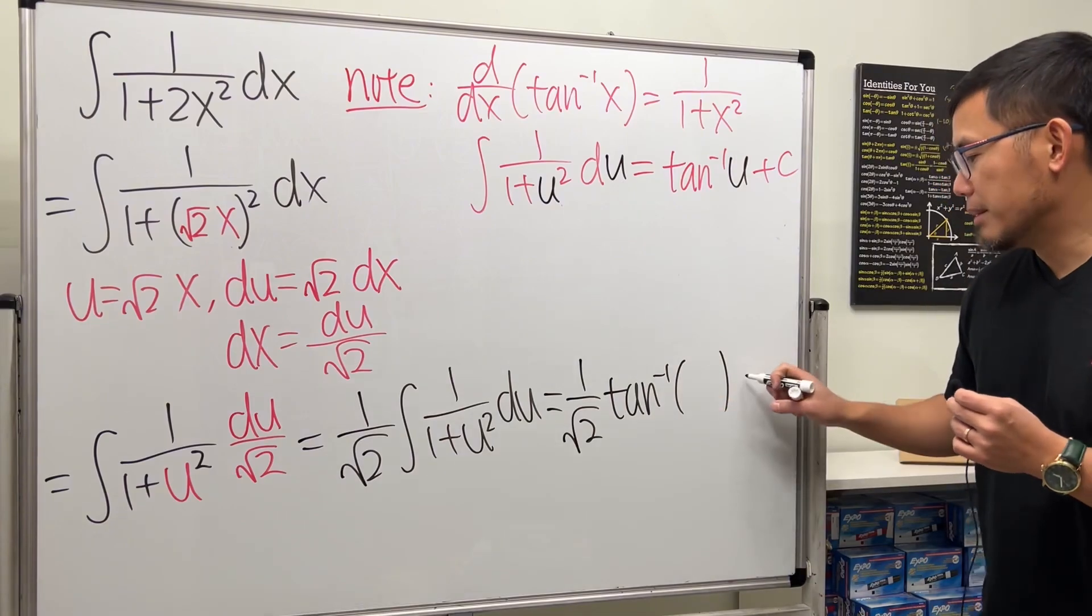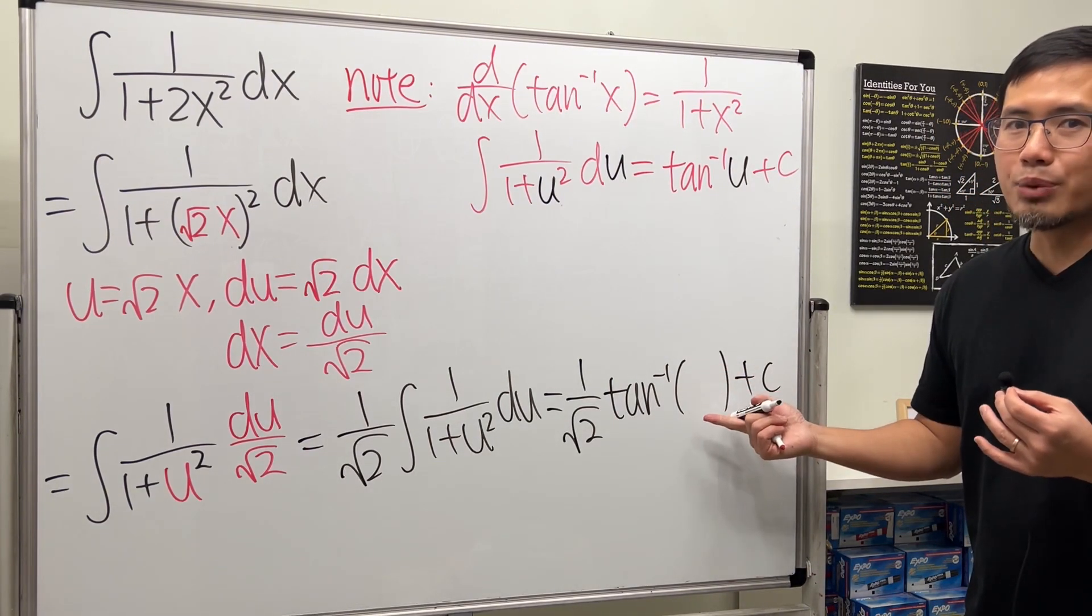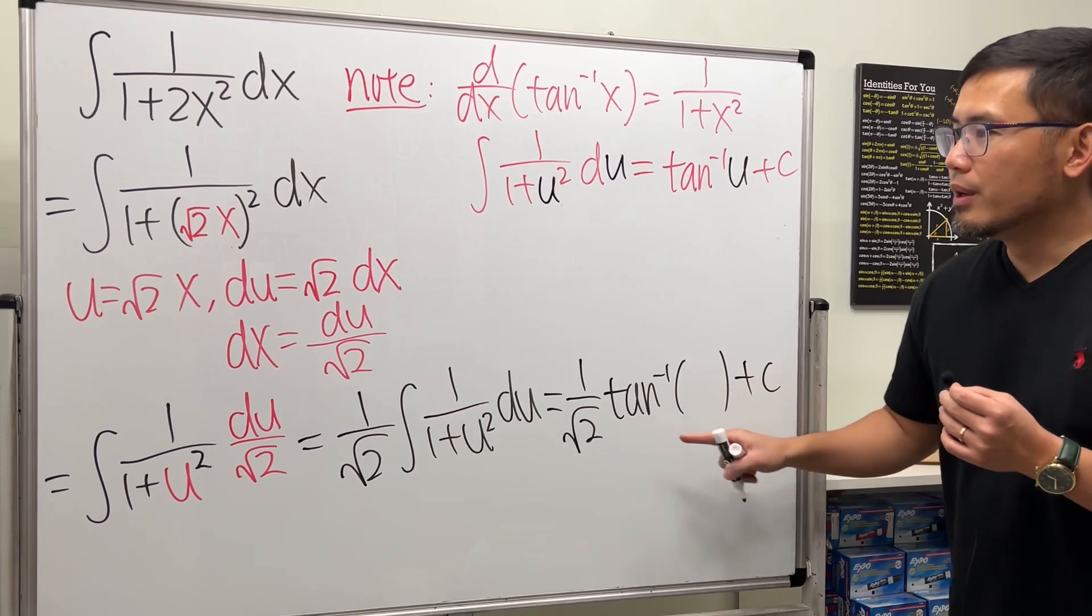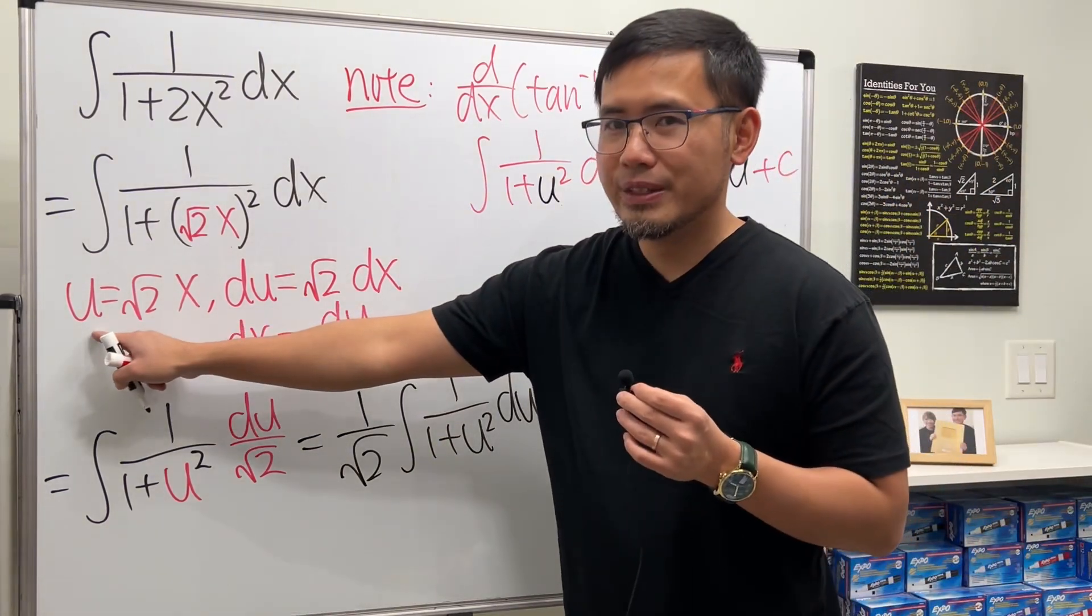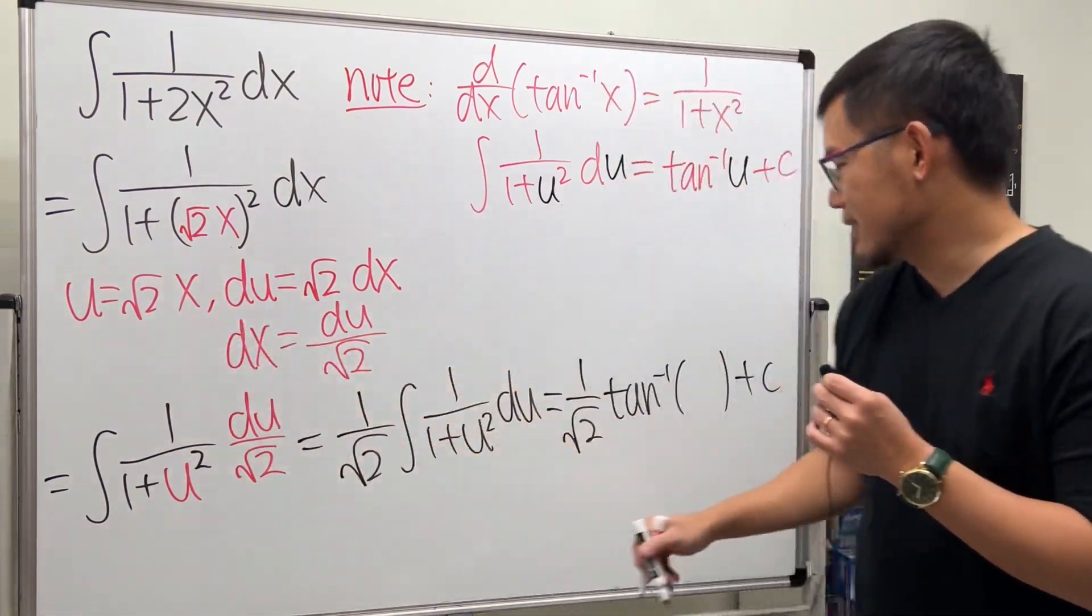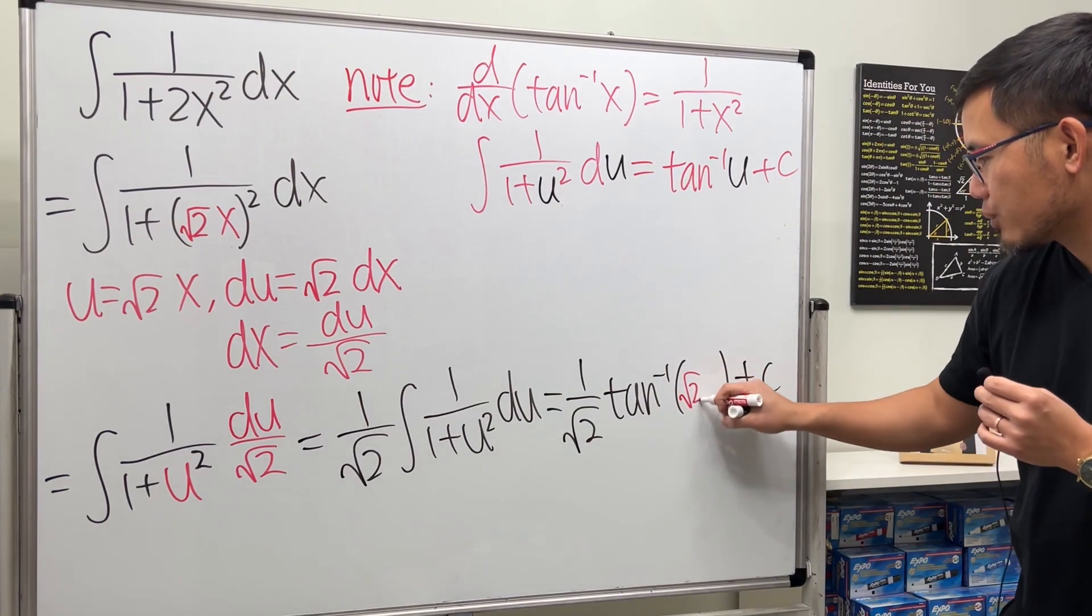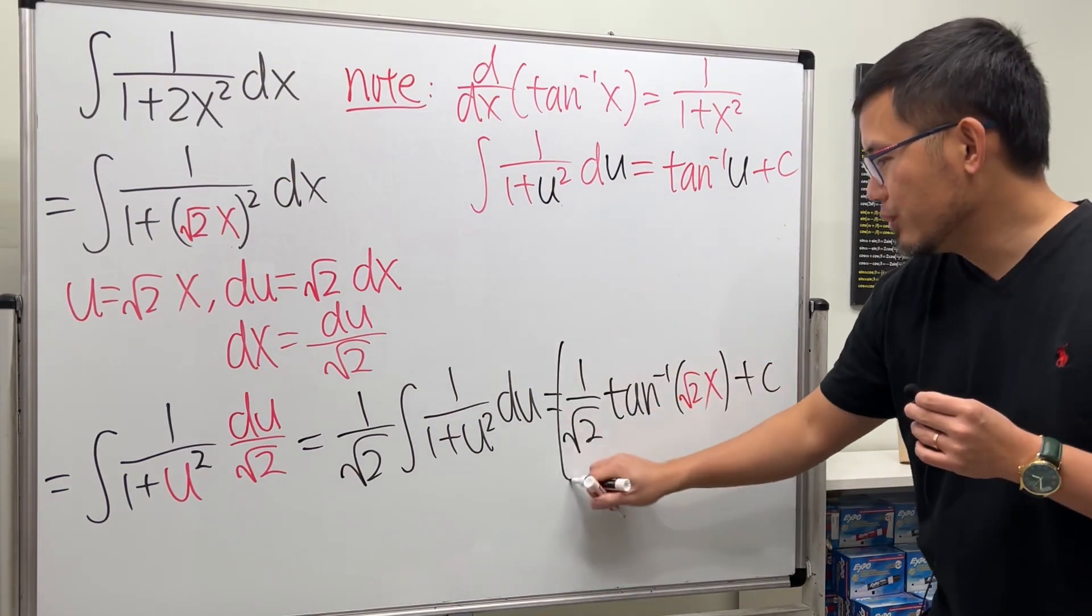u plus c. You can save one step: instead of putting down u, go back to the x-world. u is square root of 2 times x, so put that down and you are done.